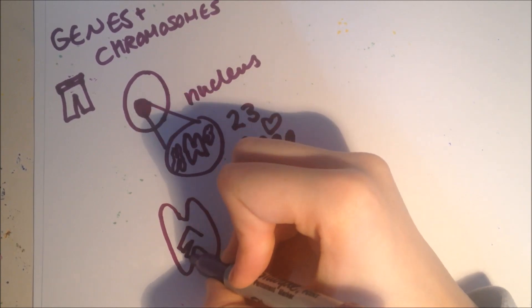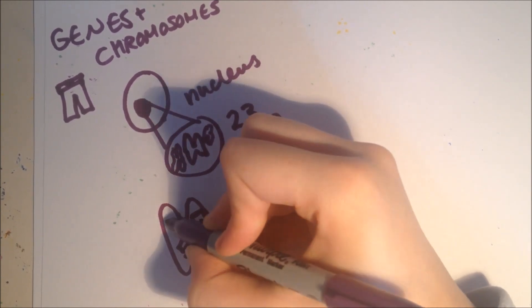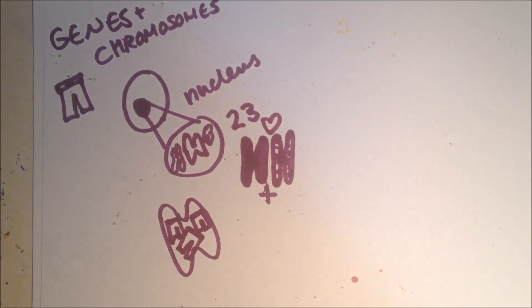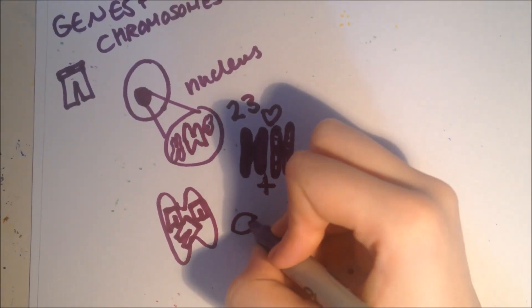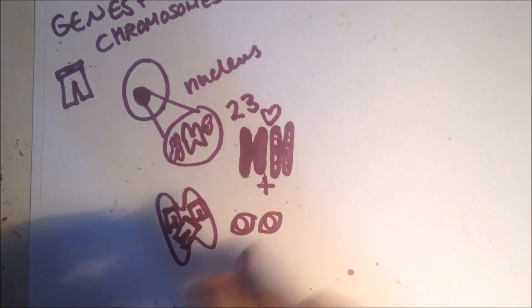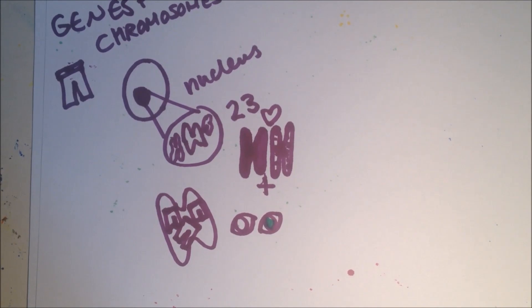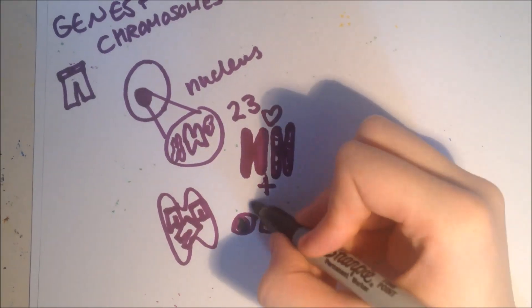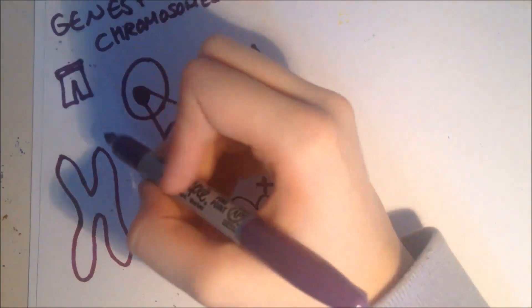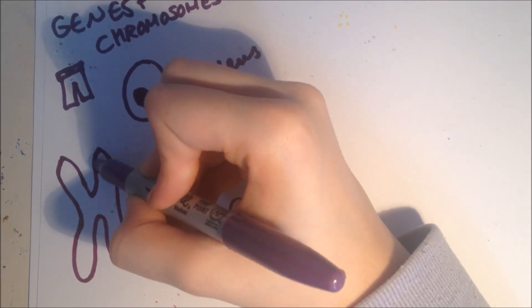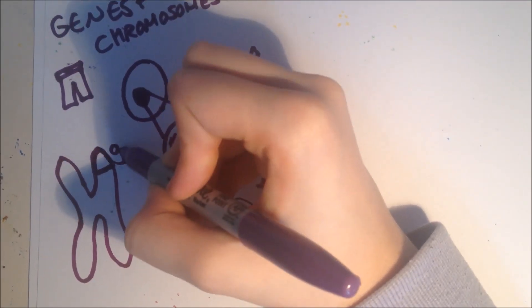The chromosomes carry genes, and the genes control the development of different characteristics. For example, the color of eyes and the color of hair as well. A gene is a short piece of the chromosome. So for example, just this bit. So this is a gene.